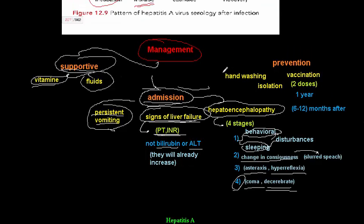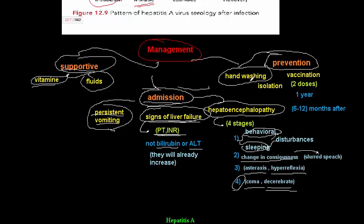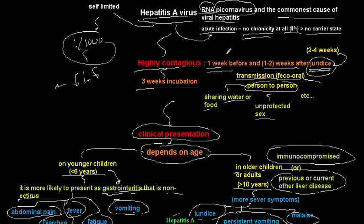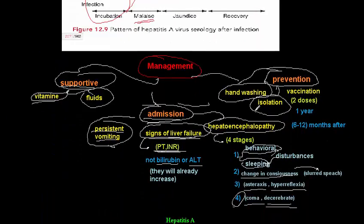Admitted patients are monitored with liver function tests. For prevention, the most important measure is handwashing. Isolation of the affected child is essential — remember the child is infectious one week before and one to two weeks after jaundice, and jaundice lasts two to four weeks. Prevent sharing cups, utensils, and so on.